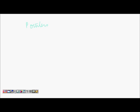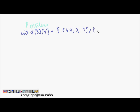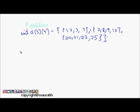We will discuss two-dimensional arrays. Let's declare int a[3][4] and initialize it as: 1, 2, 3, 4 in the first row; then 7, 8, 9, 10; and 20, 21, 22, 25. So this is our array initialized now.